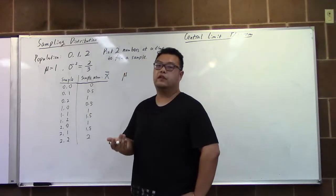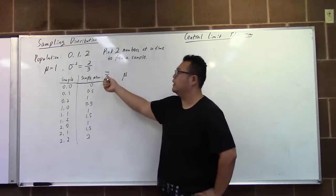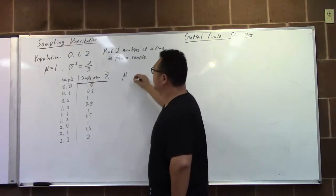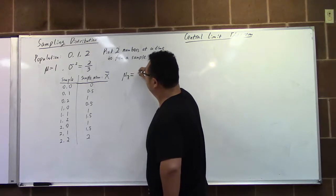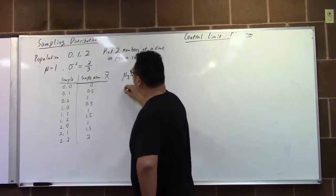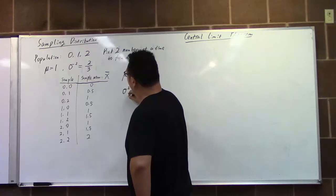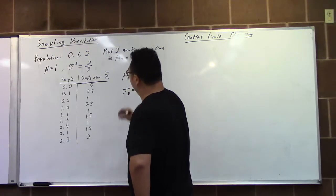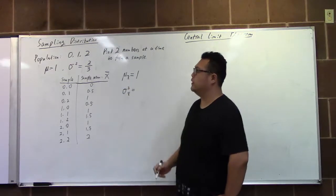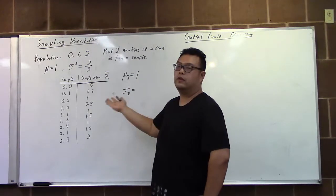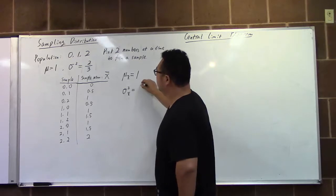The mean notation is a little different. That is the mean of the sample mean, so we have a subscript of x bar. Hence the variance of the sample mean also able to be calculated out using whichever formula. And that is 1/3.